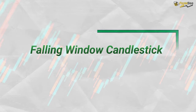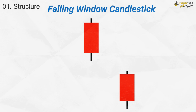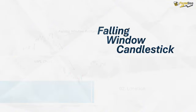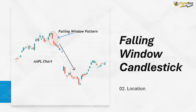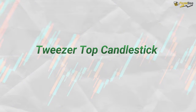Let's take a closer look at the falling window candlestick pattern. This pattern features two consecutive bearish candles. After the first bearish candle forms, the second opens with a gap down, showing strong selling pressure, and closes as another bearish candle. The key detail is the gap between the low of the first candle and the high of the second, indicating strong downward momentum. The falling window is a continuation pattern within a bearish trend, signaling that the downward momentum is likely to persist. Psychologically, the gap down suggests increasing selling pressure, and sellers remain firmly in control.